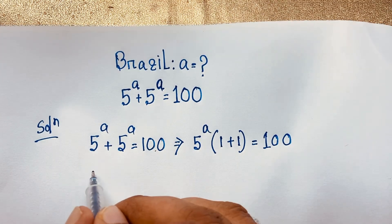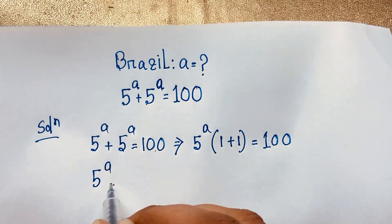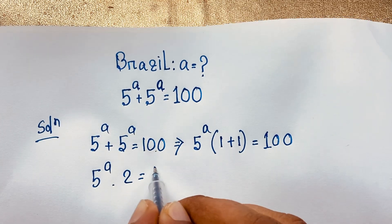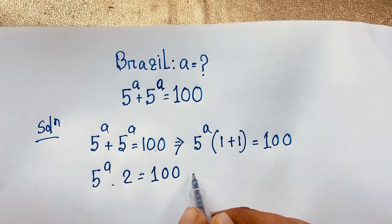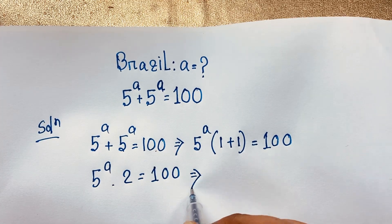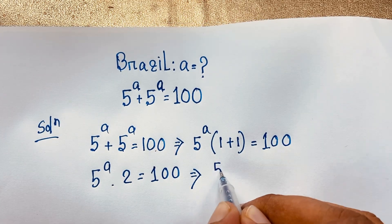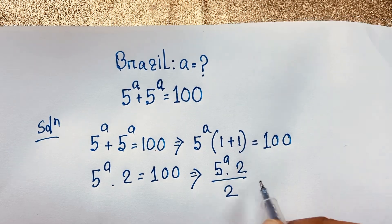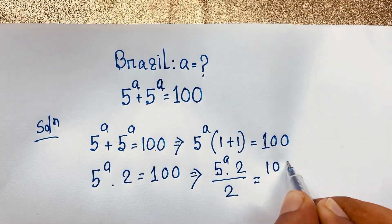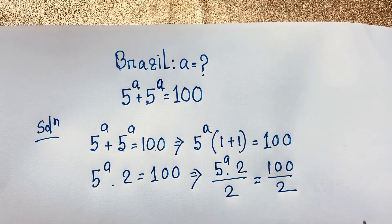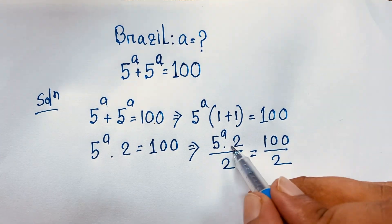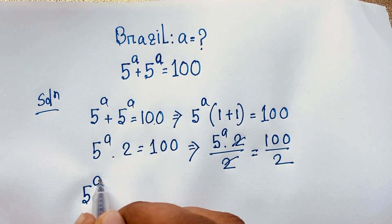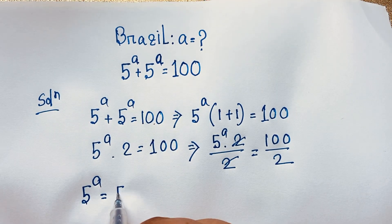Now, 5 to the power a is common. So 1 plus 1, it will be 2, is equal to 100. Now I divide both sides by 2. So 5 to the power a times 2 divide by 2 is equal to 100 divide 2. These two cancel out. So it will be 5 to the power a is equal to 50.